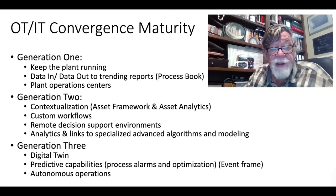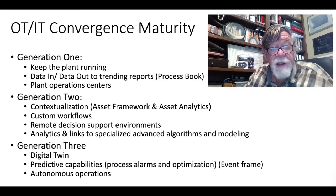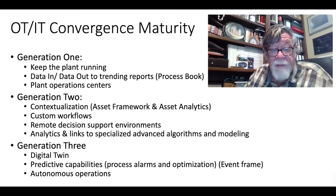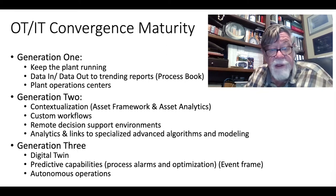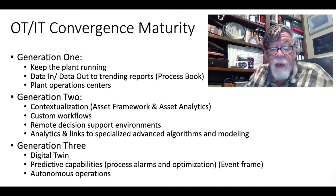This whole idea of operational technology and information technology converging really has to go through a maturity curve — it doesn't all happen at once. In generation one, this integration was really all about automation just keeping things running. The data in, data out to produce trends of performance, with technology like process books to record information. There were plant automation centers, rooms where controllers operated from. If you look at refining, that was probably 20 years ago. In the oil field, you may still see some of this first-generation maturity operations in existence. It moves on and matures. Generation two brought a lot more information about the plant or the oil field, and you really began to create an entire digital view of what was going on — an asset framework.